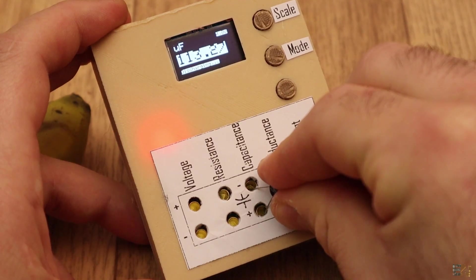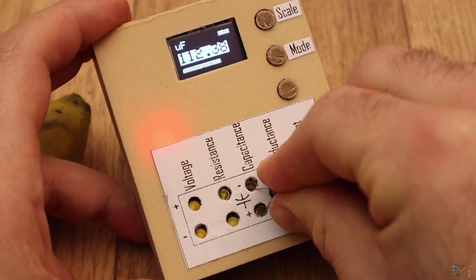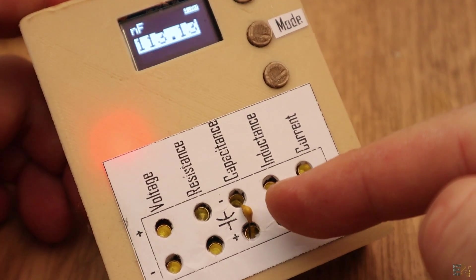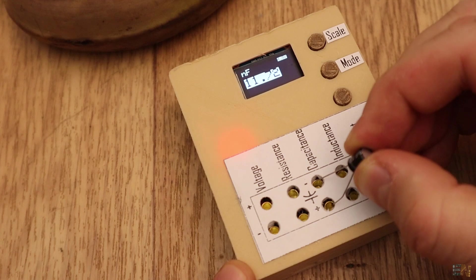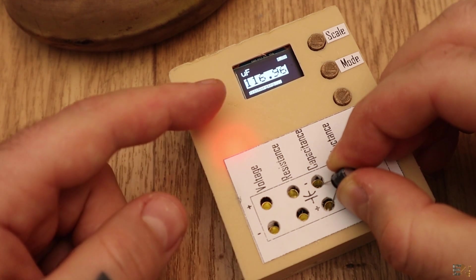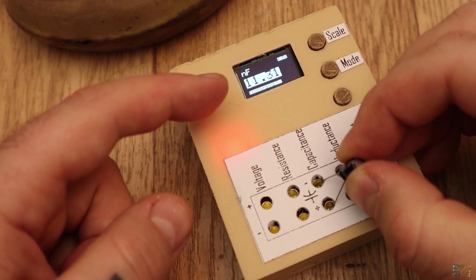This is a 100uF capacitor and using the smaller scale, we can get good results as well. If we are in the higher scale and we change from nanofarad to microfarad, the scale will automatically change.